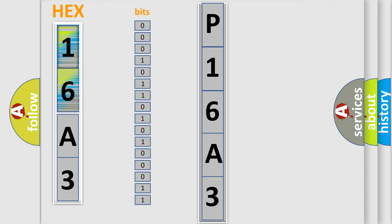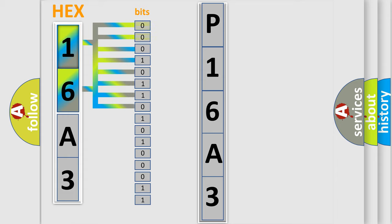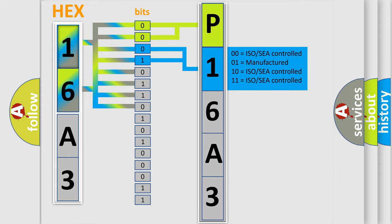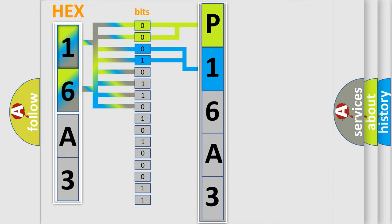One bit is the basic unit that each computer works with. The bit has two logical states: zero, which is low level, and one, which is high level. By combining the first two bits, the basic character of the error code is expressed. The next two bits determine the second character. The last bits of the first byte define the third character of the code.